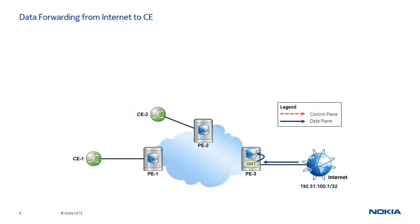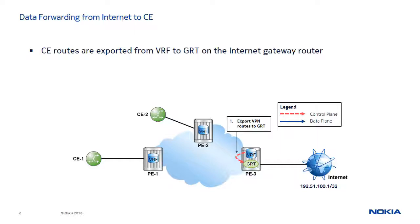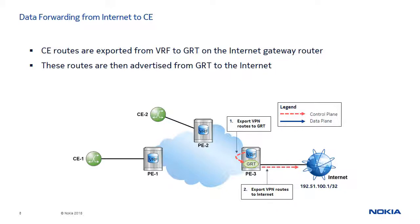Finally, to support data forwarding from the Internet back toward the CE, the CE routes must be advertised to the Internet. To meet this requirement, the CE routes are first exported from the VRF to the GRT on PE3. These routes are then advertised from the GRT to the Internet via the routing protocol running over the PE-to-Internet interface.